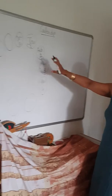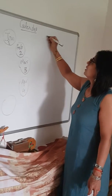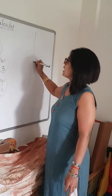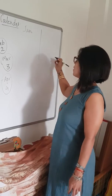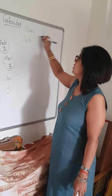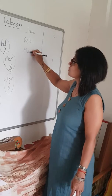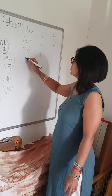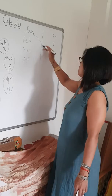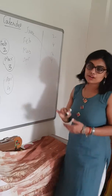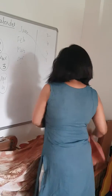Alongside this, what you can do in the copy is give a matching activity. You write Jan here and 1 here, Feb here and 2 here, March here and 4 here, April here and 3 here. These kind of activities you can also give to the kid.